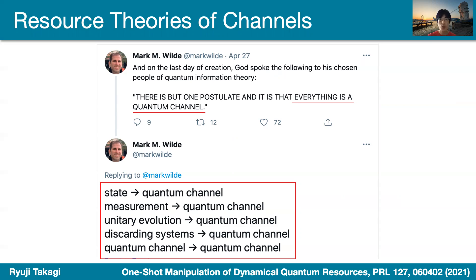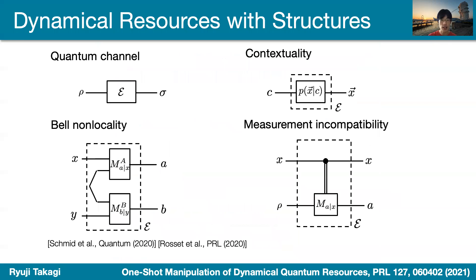This perspective also gives us interesting insights, because not only the usual quantum channels that map quantum states to quantum states, but in many situations, dynamical quantum resources are characterized by quantum channels with certain structures, such as locality, or contextuality, or measurement incompatibilities. These channels have some certain structures. So we hope to give a general framework that can also encompass these situations as well.